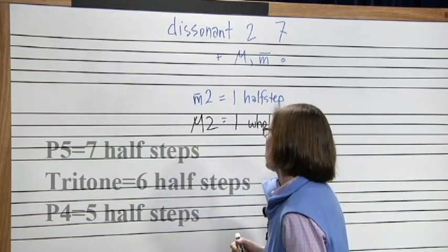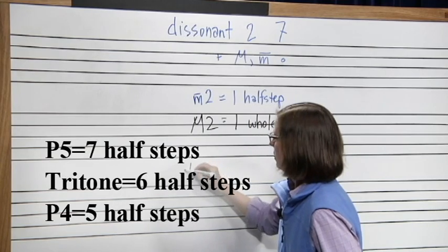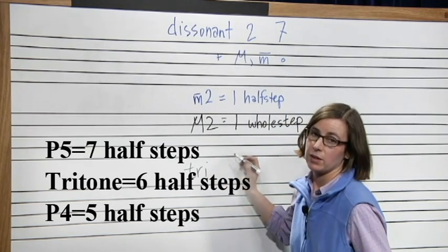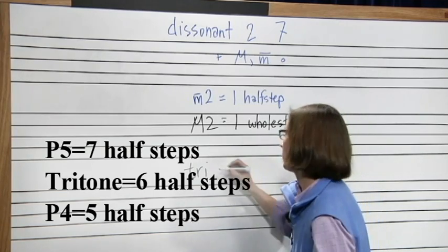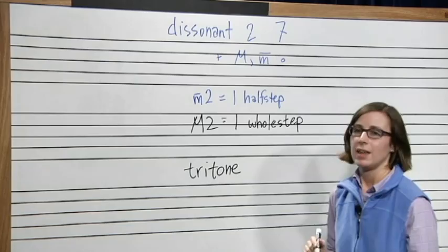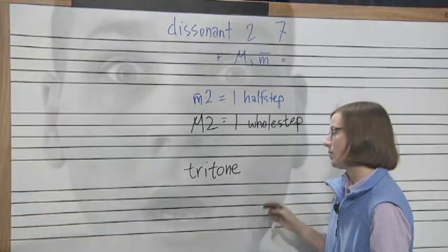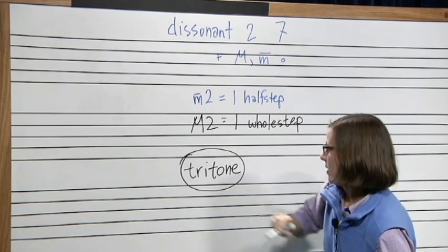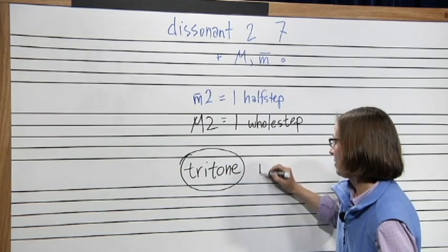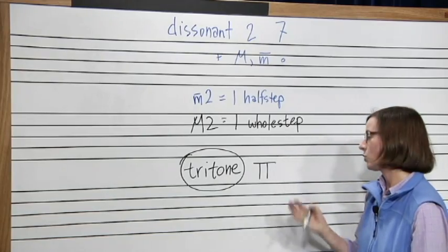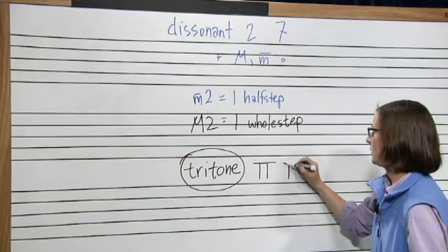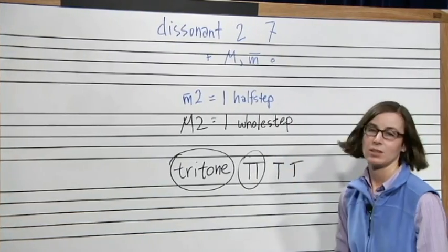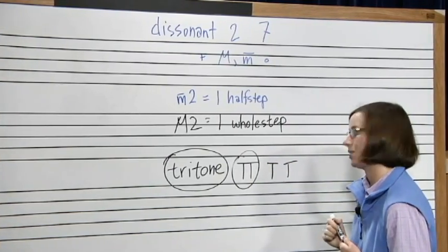So remember the tritone is in between a fourth and a fifth, it's in between a perfect fourth and a perfect fifth as far as the size. And it has this special name because it used to really shock people when they heard it, so they had to come up with their own special name for it. And we abbreviate it, people abbreviate it like this, this is really common and it looks like pie, but it's actually just because the two T's tend to kind of run together. So if you see this, it just stands for tritone.